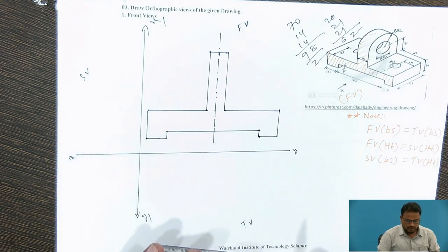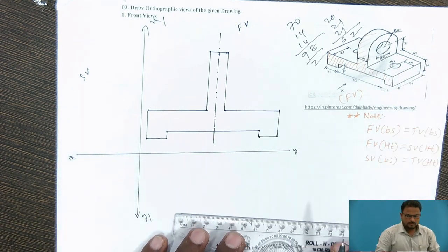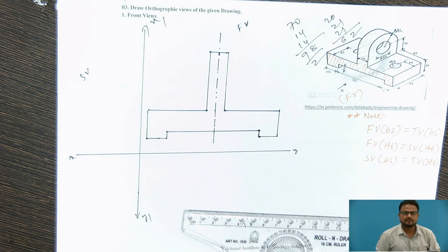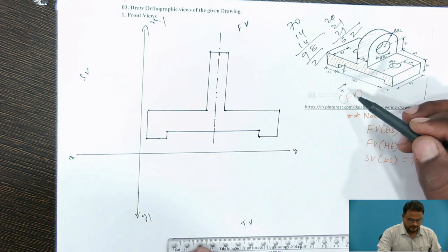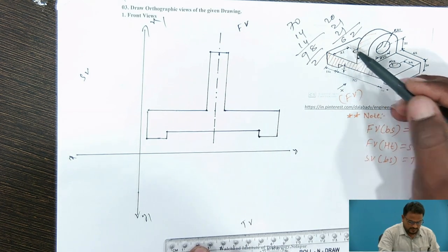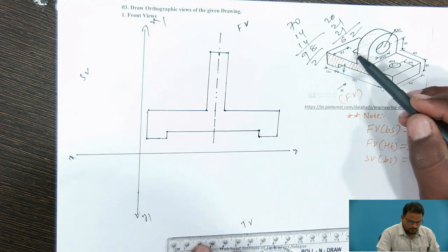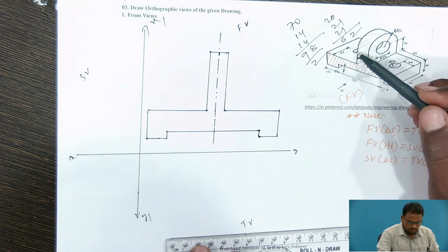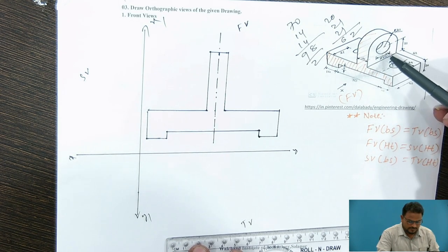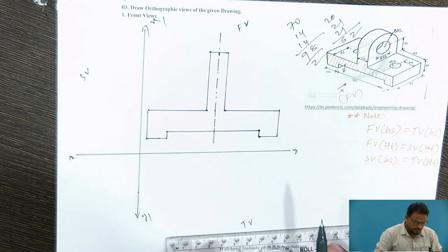Whatever parts are visible when we see from the x-direction, we have completed. Now, pause the video and think about which part is not visible. When we see from the front side, we are not going to see this hole and this hole. Its length from this side is 24 mm — it is symmetric, so 24 mm on both sides. Its diameter is 12 mm. Another hole here is also not visible, same diameter 12 mm. Another hole not visible from the front in the x-direction has a diameter of 20 mm.